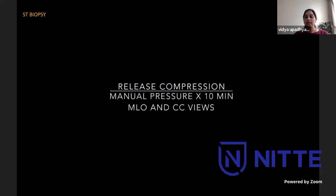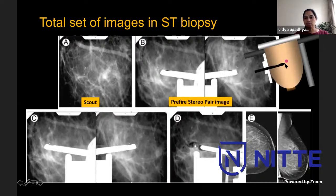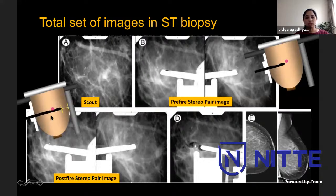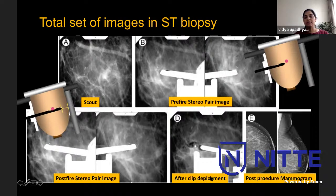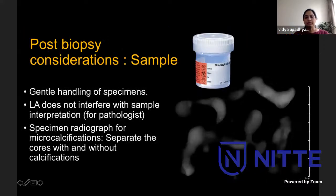After releasing compression, we apply manual pressure for 10 minutes then obtain standard MLO and CC views to document clip position. Total images in ST biopsy include: scout, pre-fire, post-fire, after clip deployment, and standard films post-procedure. In our institution, we use digital breast tomosynthesis guided ST procedures, which is much faster and allows us to cut down on several steps and exposures.